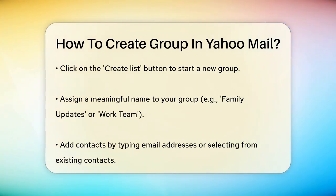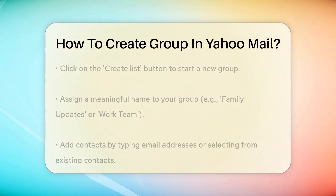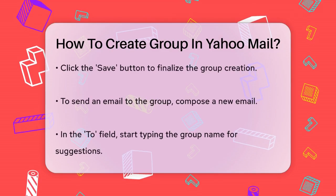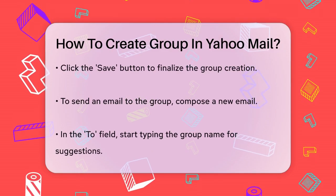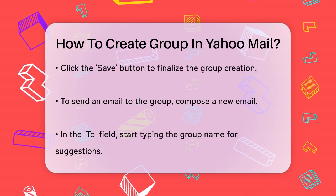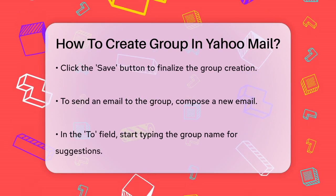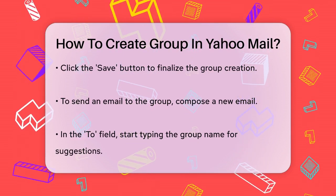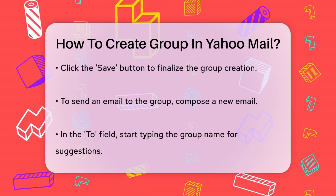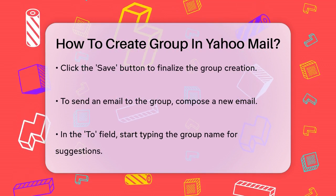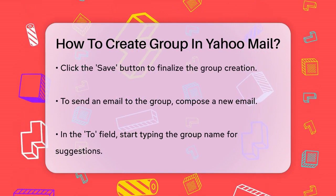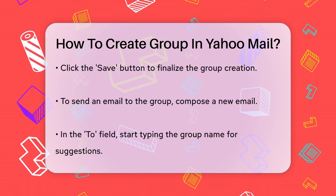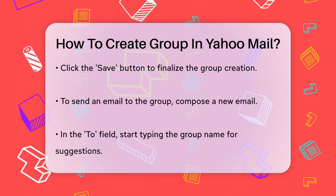After naming the group, you can start adding contacts. You can either type in the email addresses of the people you want to include or select them from your existing Yahoo contacts list. Once you've added all the contacts you need, click the Save button. Your email group is now created and ready to use.